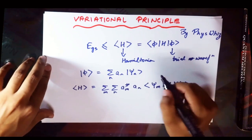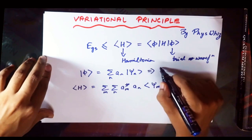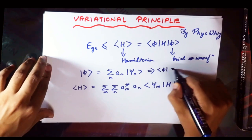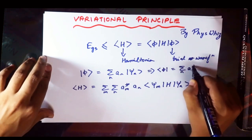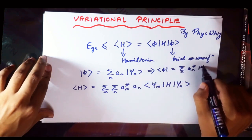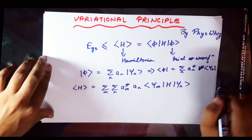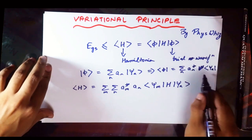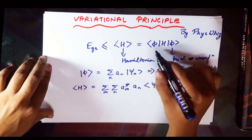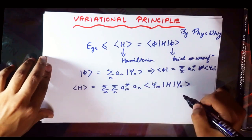When you take the Hermitian adjoint of phi, you get a_n* (the complex conjugate of a_n) and the adjoint of the psi term. Using this, you can plug the expansion of phi into the expectation value of H — that is, the bracket phi H phi — to get the expectation value of H.